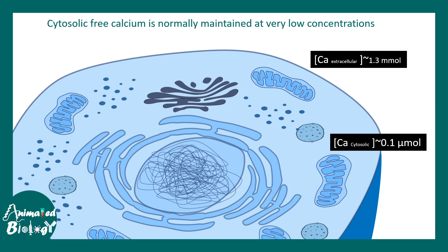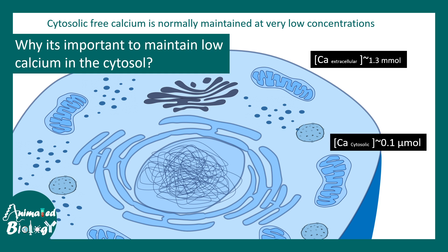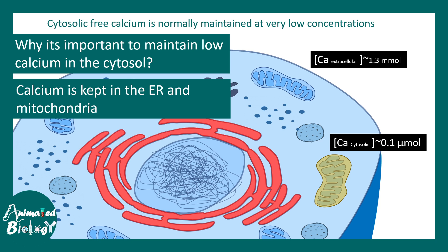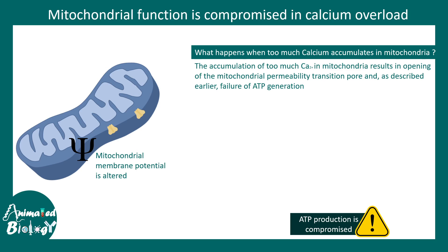It turns out most of the calcium present in the cell is stored in a reservoir — specifically the endoplasmic reticulum and the mitochondria. So let's see what really happens when you have too much calcium.